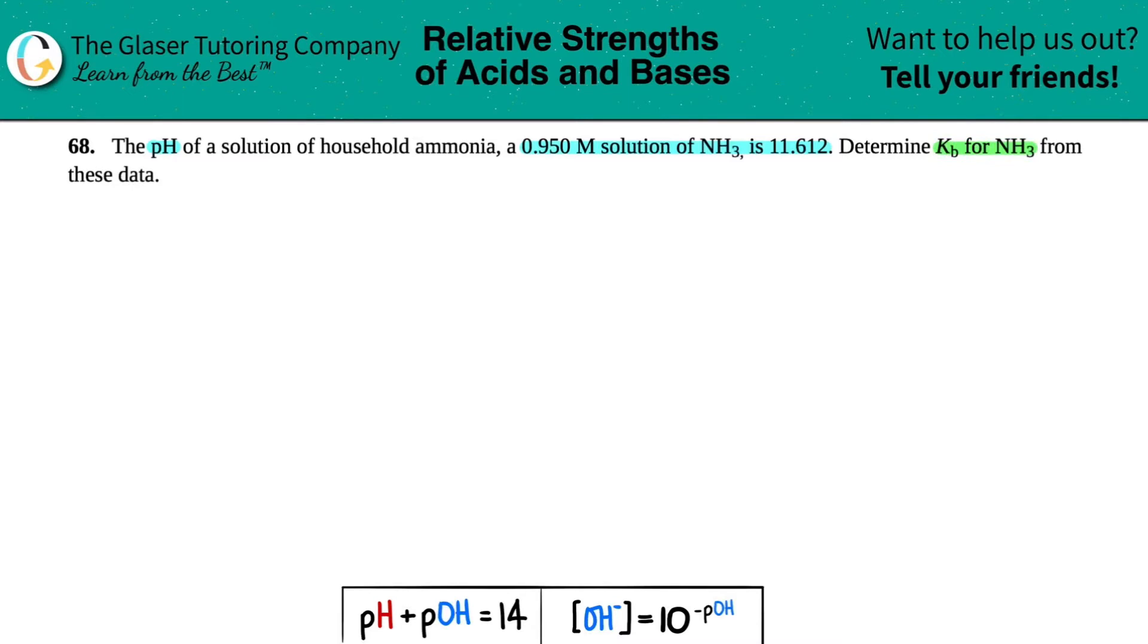Okay, so let's write down everything that they gave us. They gave us the pH of this concentrated solution is 11.612. So we got a pH value of 11.612, and just know that anytime they give us pH values, that's always at equilibrium. So pH values, POH values, those are always at equilibrium.